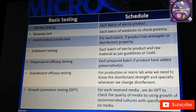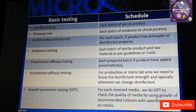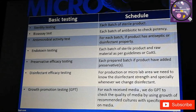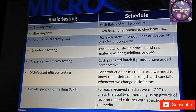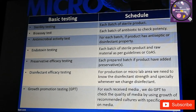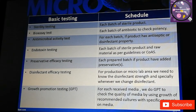Another test is GPT — growth promotion testing. We do this test for each batch of received media. We use dehydrated media, and if the growth promotion test complies as per the COA received along with the dehydrated media, we approve it. We use culture strains for this purpose, and also for preservative efficacy and disinfectant effectiveness testing.